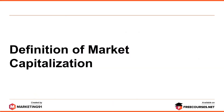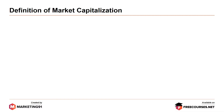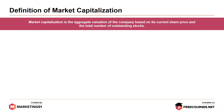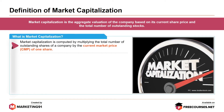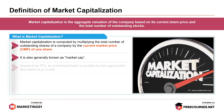Let's start with the definition of market capitalization. Market capitalization is the aggregate valuation of the company based on its current share price and total number of outstanding stocks. Market capitalization is computed by multiplying the total number of outstanding shares of a company by the current market price of one share. It is also generally known as market cap.